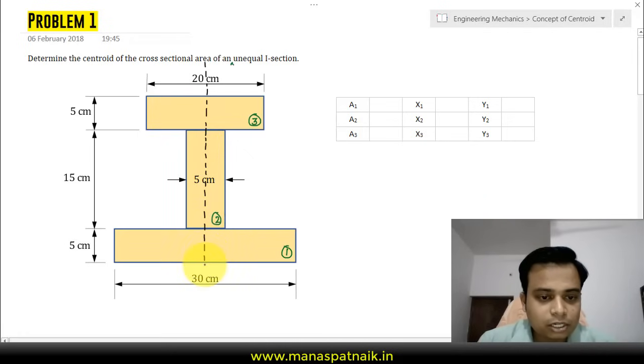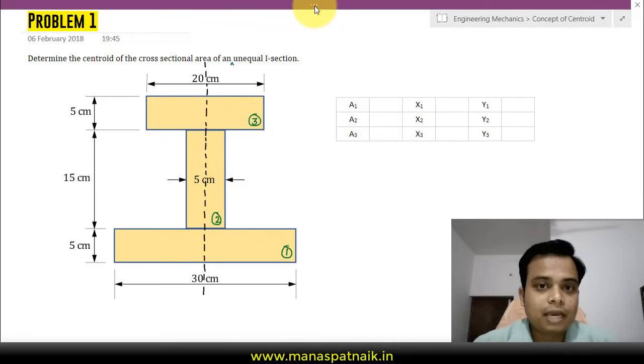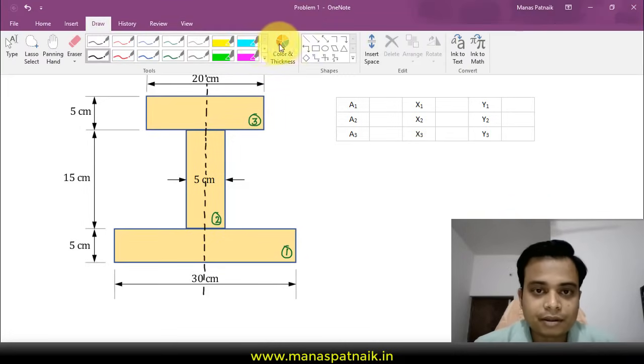Now if that is so, then one thing is for sure: the centroid of this particular I section should definitely lie somewhere along this dotted line. The height at which that centroid lies we have no idea about, but we can work that out eventually.